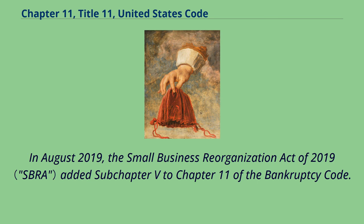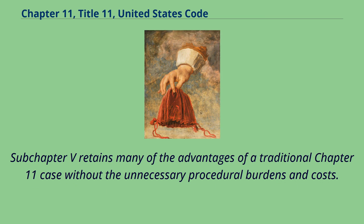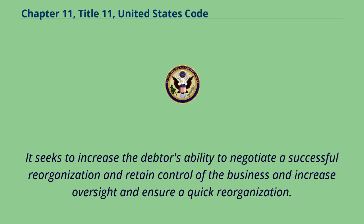In August 2019, the Small Business Reorganization Act of 2019 added Subchapter V to Chapter 11 of the Bankruptcy Code. Subchapter V, which took effect in February 2020, is reserved exclusively for the small business debtor with the purpose of expediting bankruptcy procedure and economically resolving small business bankruptcy cases. Subchapter V retains many of the advantages of a traditional Chapter 11 case without the unnecessary procedural burdens and costs, seeking to increase the debtor's ability to negotiate a successful reorganization, retain control of the business, and ensure a quick reorganization.